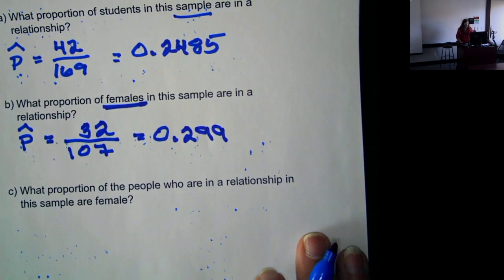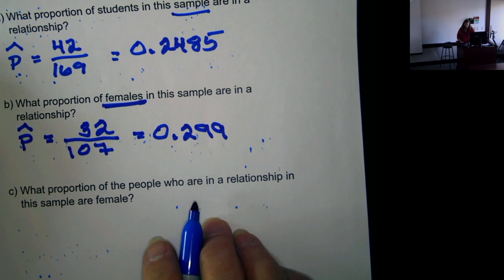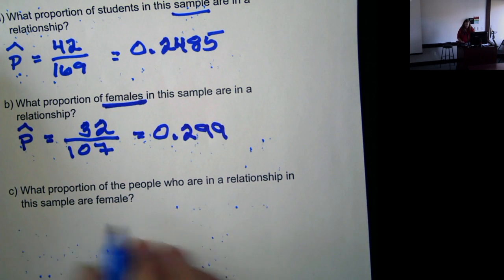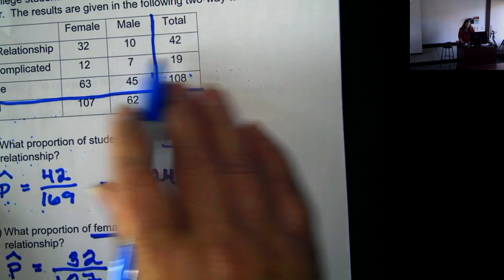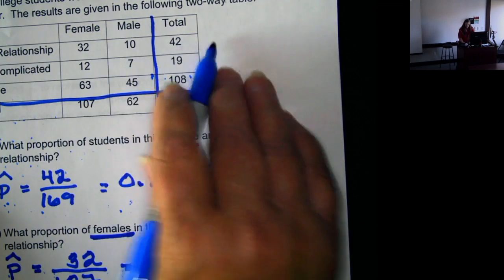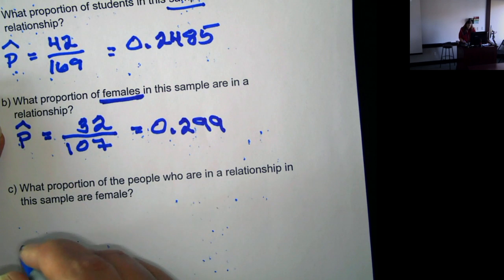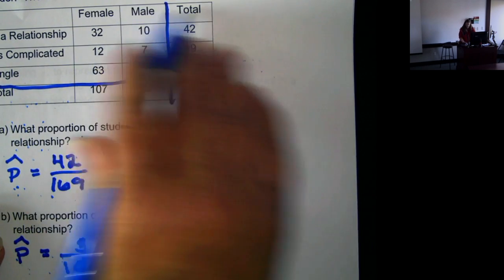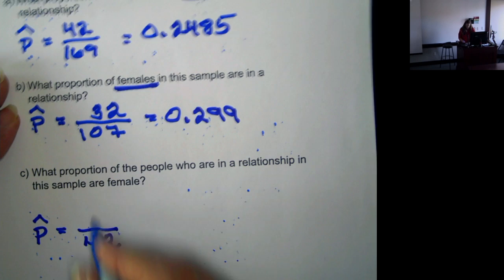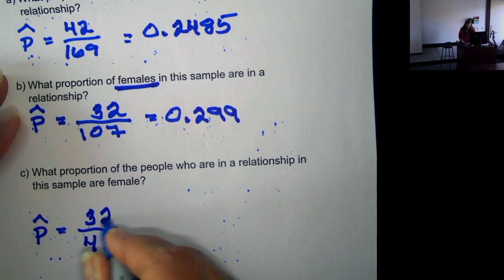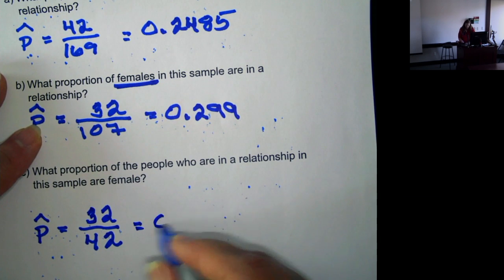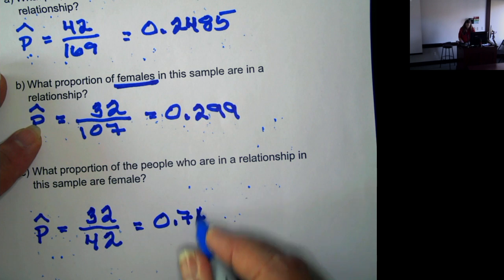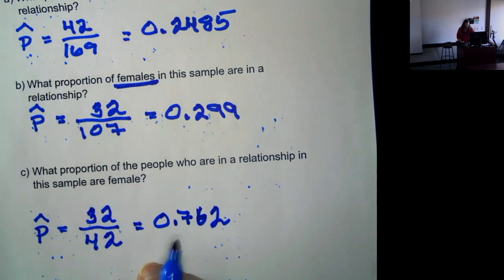Now, looking at it the opposite way, what proportion of people who are in a relationship are female? That means we're now looking at this first row of just those in relationship. So we have p hat, our denominator is 42, and of the total in a relationship, 32 are female, which gives us a proportion of 0.762.